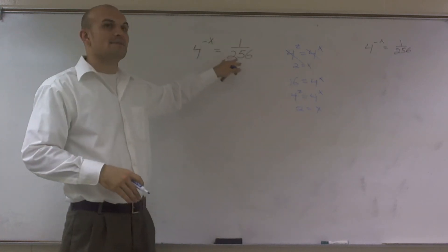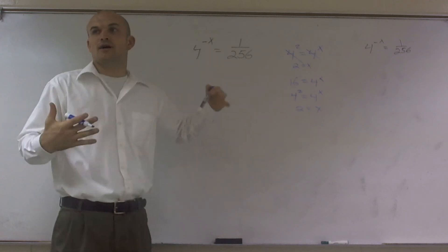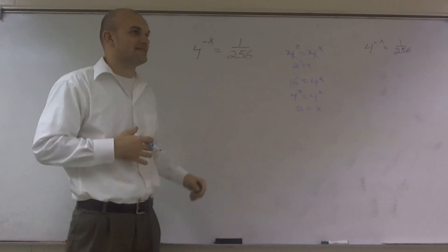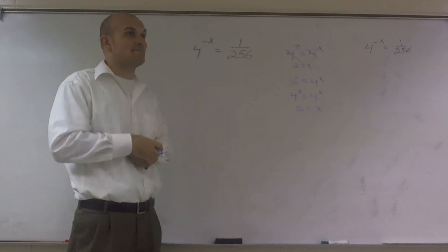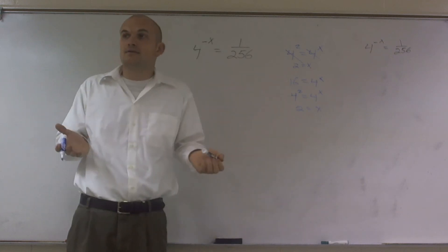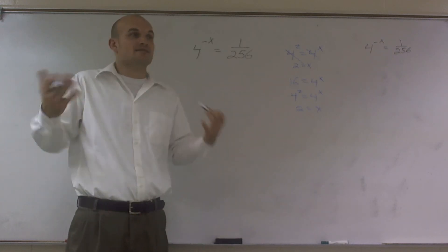But here I have the same thing, just with a little bit more difficult numbers. So I have 1 over 256. How can I manipulate that to see if it has the same base of 4? It might not or it might, and if it does, it's going to make the problem very easy.